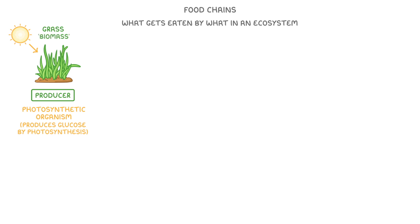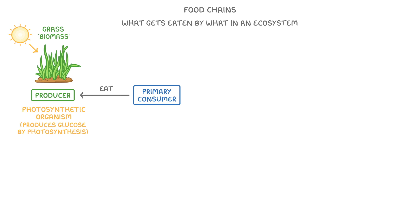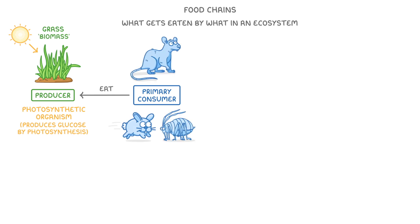The next step in the chain are the primary consumers, which eat the producers. And even though there might be lots of different primary consumers in a particular ecosystem, like rabbits, mice, aphids, and so on, we only show one of these in the food chain. So let's stick with mice for now.